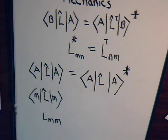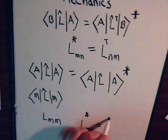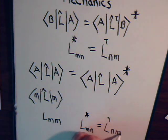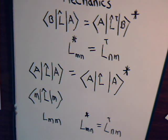The other components of the matrix can be complex numbers, but we still have an additional relationship. The off-diagonal elements have to be complex conjugates of each other.